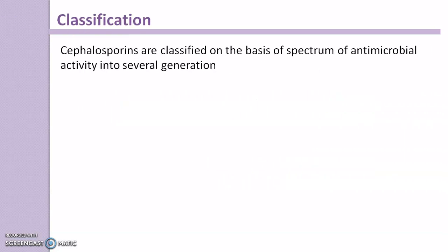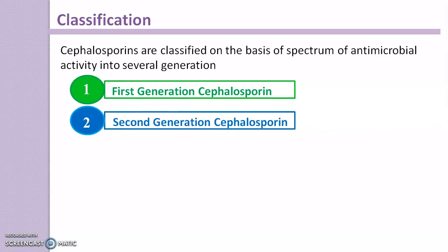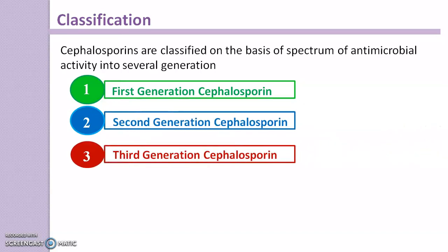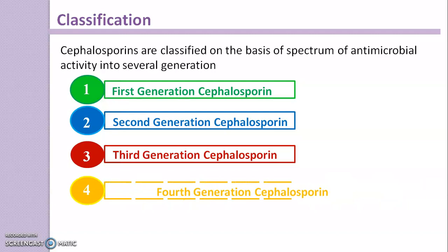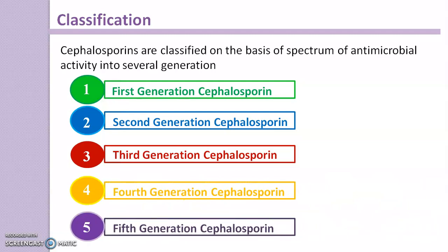Cephalosporins are classified on the basis of spectrum of antimicrobial activity into several generations, like 1st generation cephalosporins, 2nd generation cephalosporins, 3rd generation cephalosporins, 4th generation cephalosporins, and 5th generation cephalosporins. All these several generations depend upon their spectrum of antimicrobial activity.